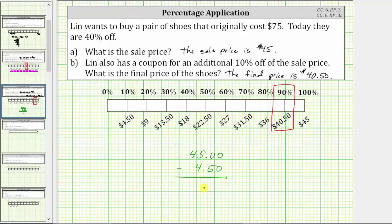Bring the decimal down. Zero minus zero is zero. Here we need to perform an exchange. Five changes to a four. We now have a 10 in the tenths. 10 minus five is five. 44 minus four is 40. Of course, giving us the same final price of $40.50.